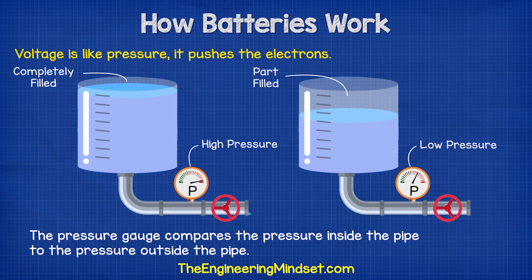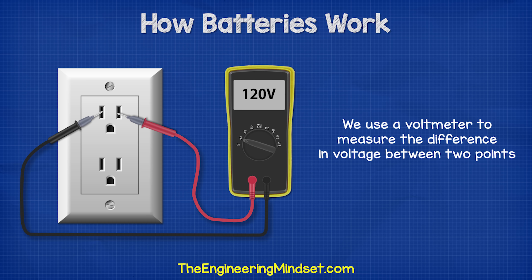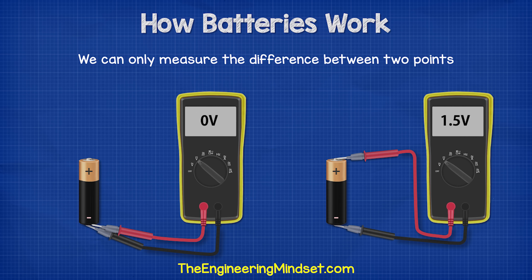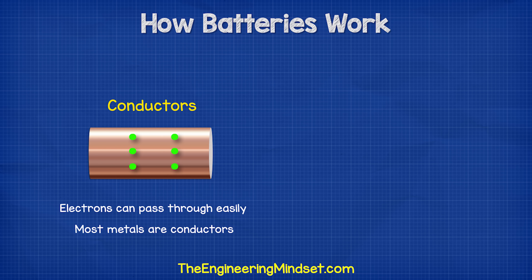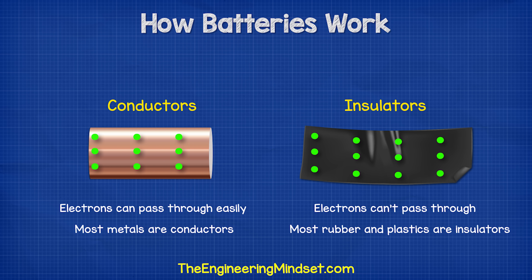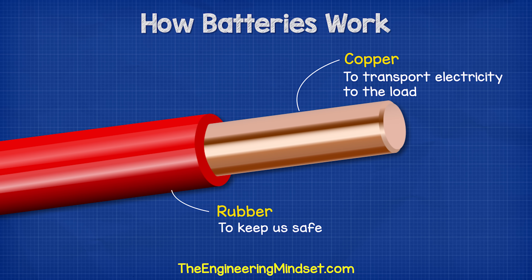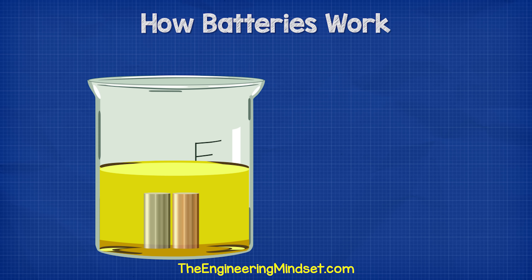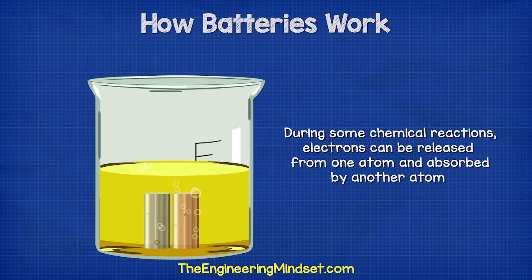Voltage is like pressure in a water tank — to know how much pressure we have, we compare the pressure inside the pipe to the pressure outside using a pressure gauge. When it comes to voltage, we use a voltmeter to measure the difference in voltage between two points. If we measure across a battery we get 1.5 volts, but measuring the same end gives us zero volts because there's no difference. Some materials allow electrons to pass through easily — these are conductors, like copper and most metals. Others do not allow electrons to pass — these are insulators, like rubber and most plastics. That's why we use copper wires with rubber insulation. By mixing certain materials together we can cause chemical reactions, where atoms bond together or break apart, and electrons can be captured or released.